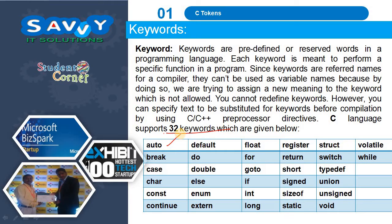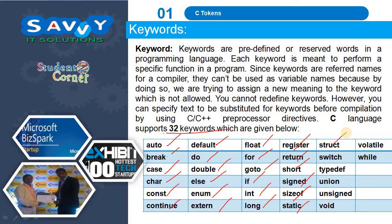The 32 keywords are: auto, break, case, char, const, continue, default, do, double, else, enum, extern, float, for, goto, if, int, long, register, return, short, signed, sizeof, static, struct, switch, typedef, union, unsigned, void, volatile, while. These are the 32 keywords.